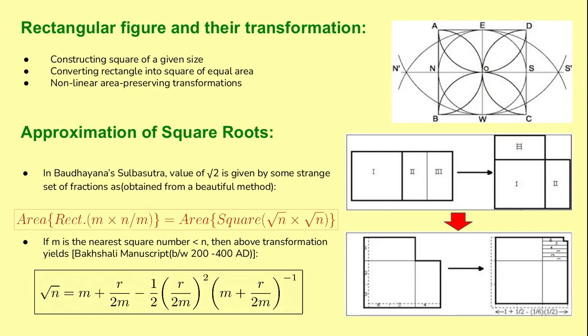The basic geometric theme of the Sulba Sutra is the transformation of figures into one another with a given relationship between the areas of the initial and final figure. The method of construction is often purely geometric with some amount of mensuration. Many procedures are of the cut-and-move and area-matching variety, but quite a few invoke the theorem of the diagonal and its converse.